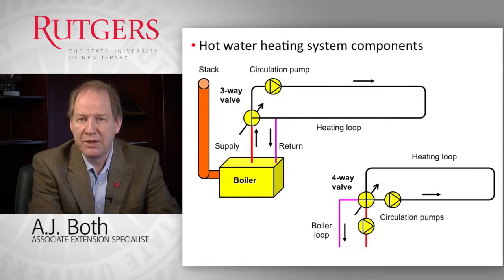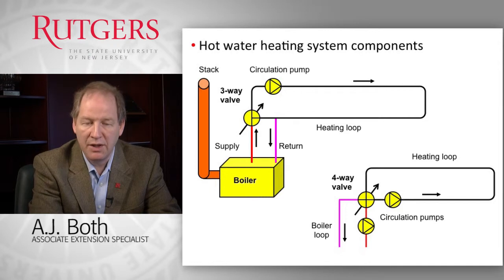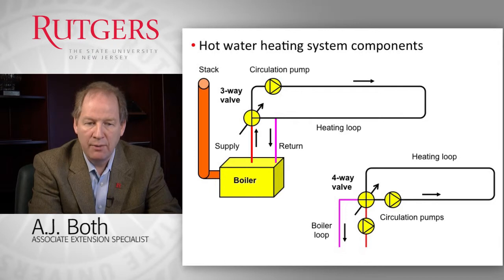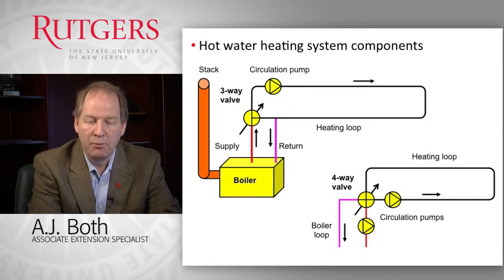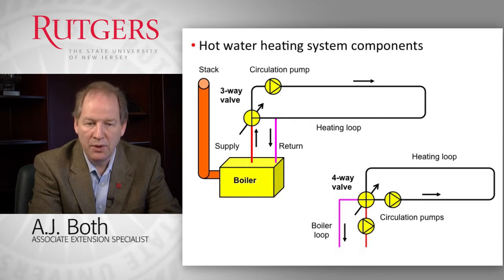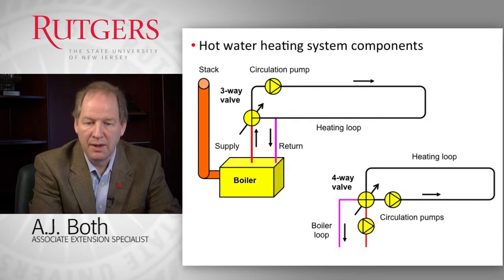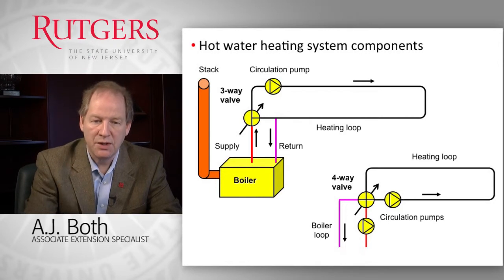Components of hot water heating systems include the boiler, where you combust your fuel and heat the water. Then you need to distribute that water throughout your greenhouse using pumps and valves — sometimes three-way valves, sometimes four-way valves — to push water through the plumbing system to the locations where heat is needed. This slide shows simplistically two different designs for three-way versus four-way valve systems.